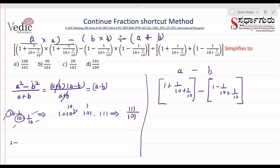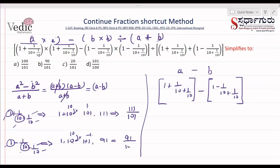The second value, b, is 1 minus 1/10 plus 1/10. Take 1 and 10: the whole number is 10. Multiply: 10 times 10 is 100, plus 1 is 101. The next whole number is minus 1: minus 1 times 101 is minus 101. Then minus 101 plus 10 is minus 91. So the answer for b is 91 divided by 101.